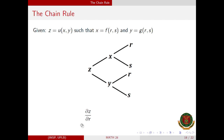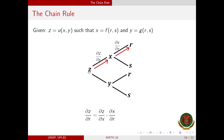If we are asked to find the partial derivative of z with respect to r, we have two paths to take. For the first path, we have the partial derivative of z with respect to x times the partial derivative of x with respect to r. For the second path, we add the partial derivative of z with respect to y times the partial derivative of y with respect to r. This is the formula for the partial derivative of z with respect to r.